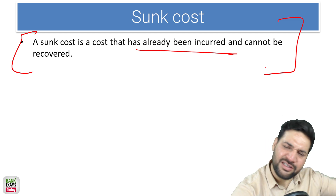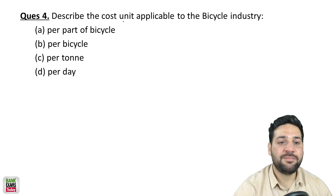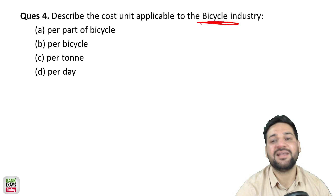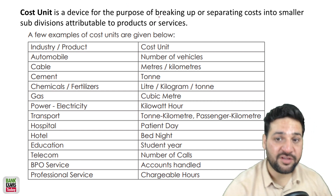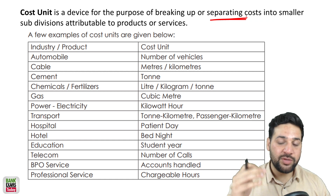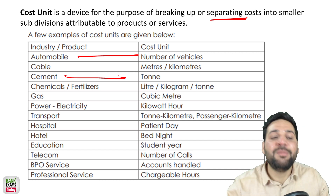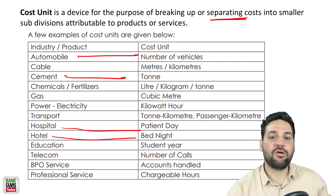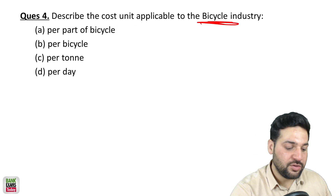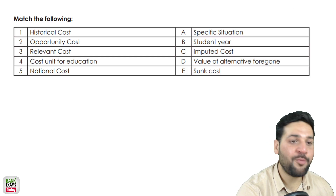Which best describes the cost unit applicable to the bicycle industry? Cost unit is a device for breaking up or separating the cost for calculation purposes. For automobile it is number of vehicles; for cement it is ton of cement produced; for hospital it is patient days; for hotel it is bed nights. So for the bicycle industry, it is per bicycle produced.